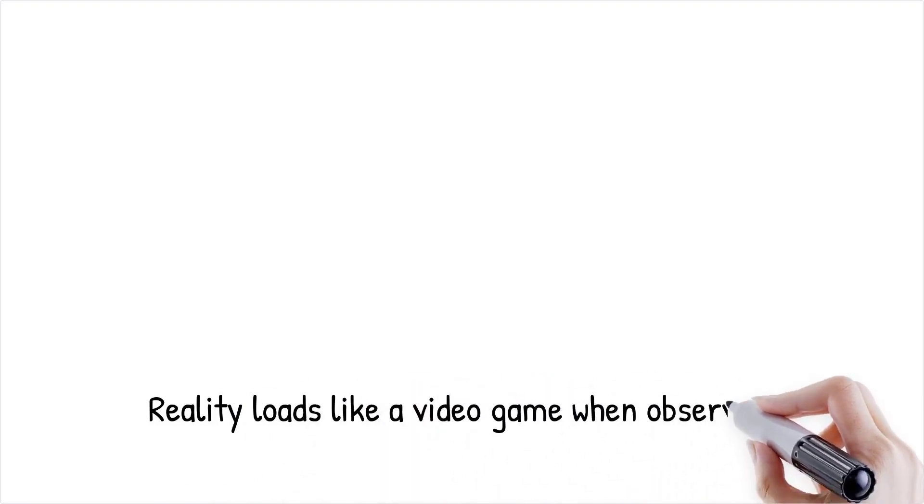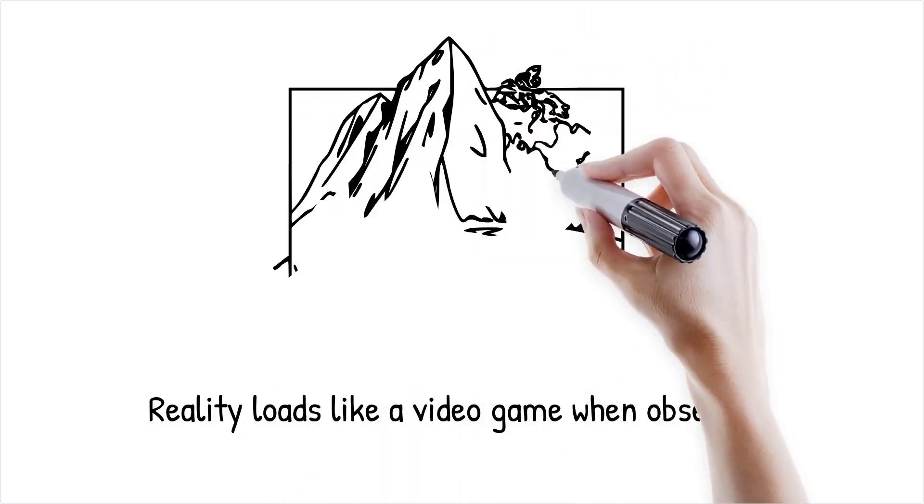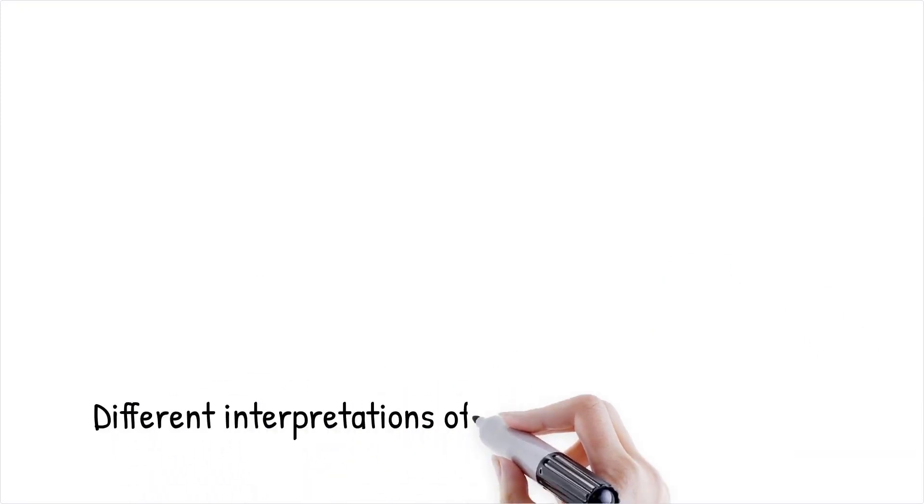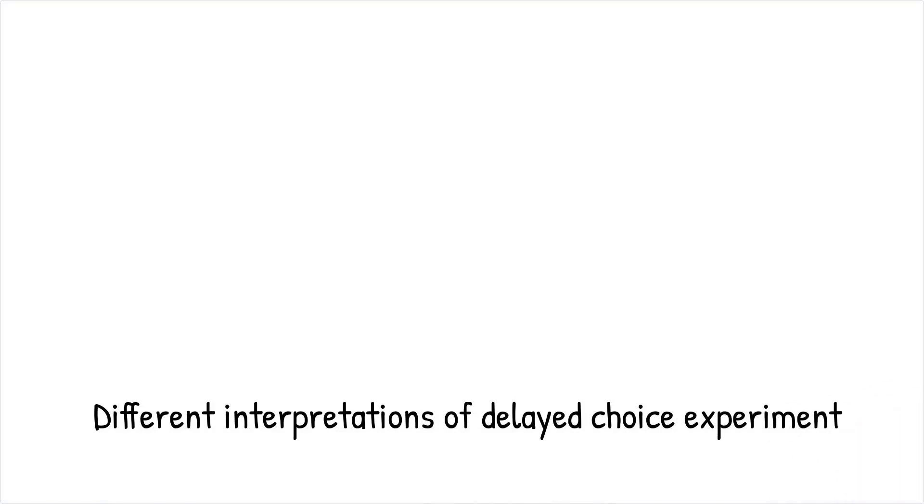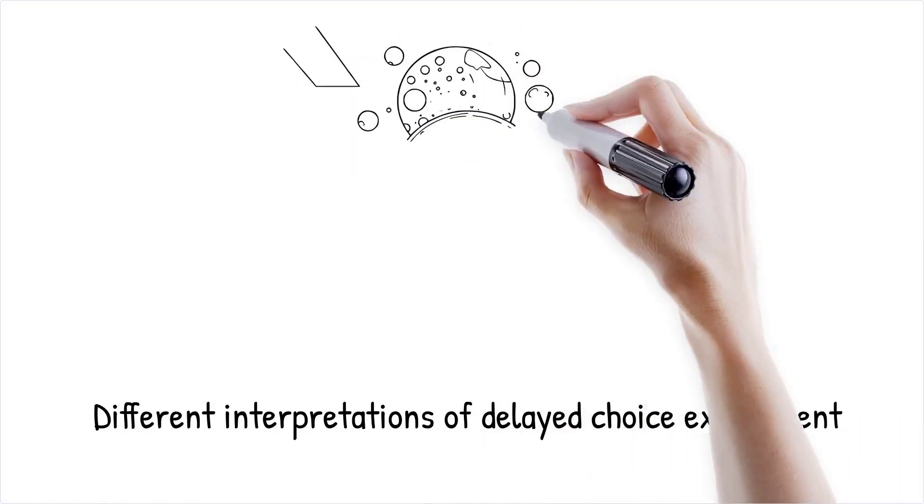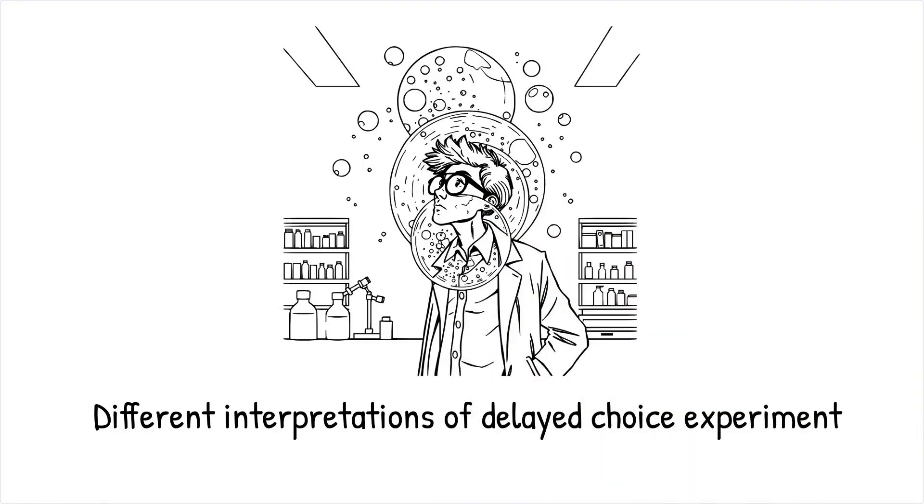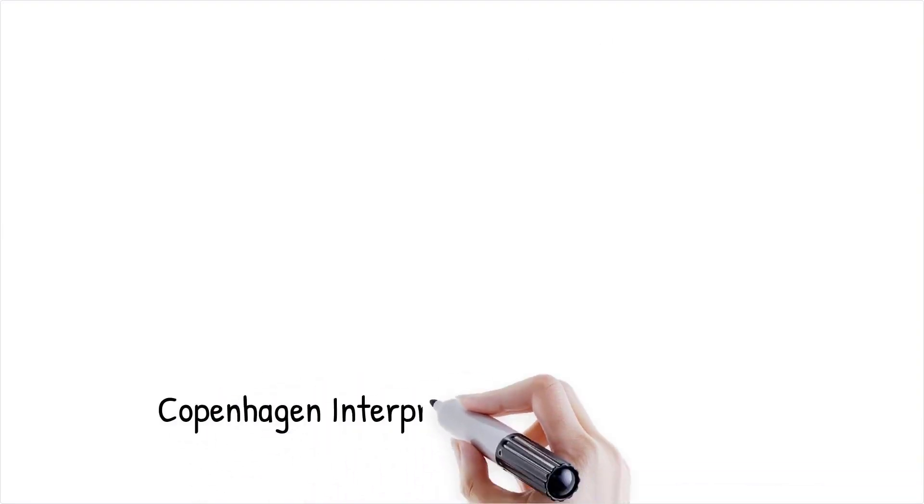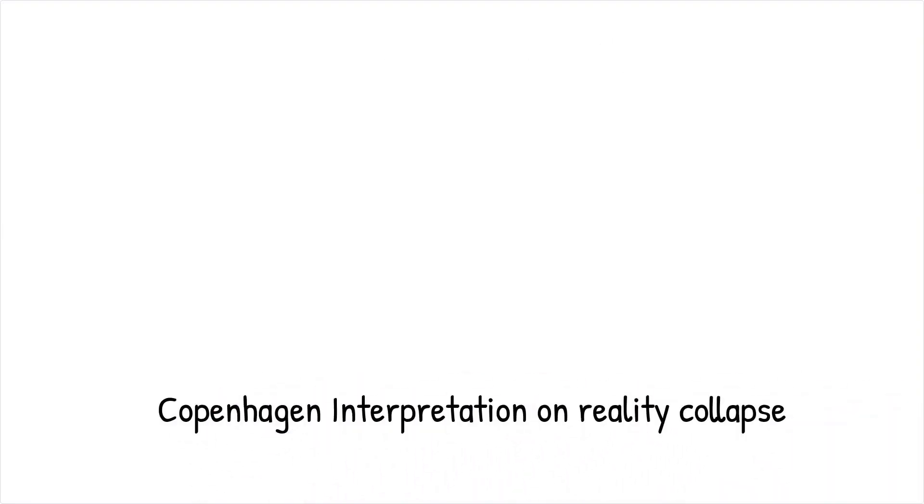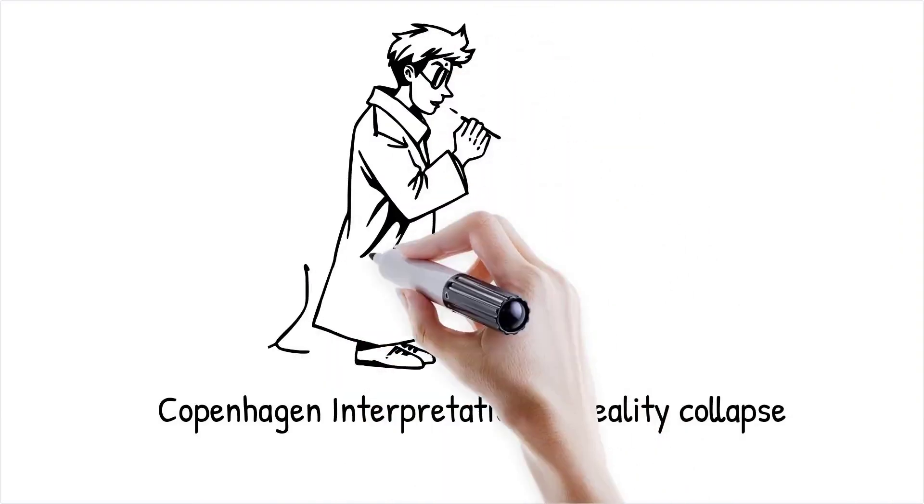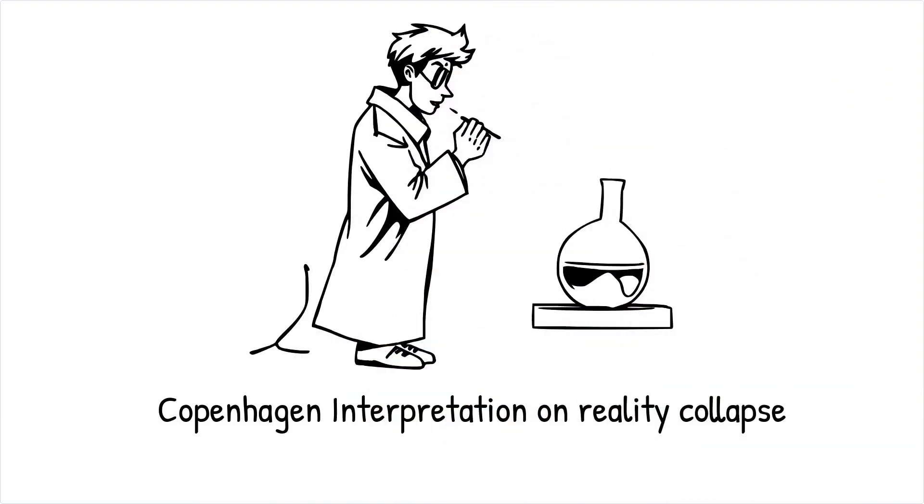Physicists have proposed several interpretations to explain the strange findings of the delayed choice experiment. The many worlds interpretation suggests that all possible outcomes exist in parallel universes, meaning every choice creates a new reality. On the other hand, the Copenhagen interpretation maintains that reality collapses into a single outcome upon observation. These competing views offer drastically different perspectives on the nature of existence, whether we live in a single deterministic universe or an ever branching multiverse.